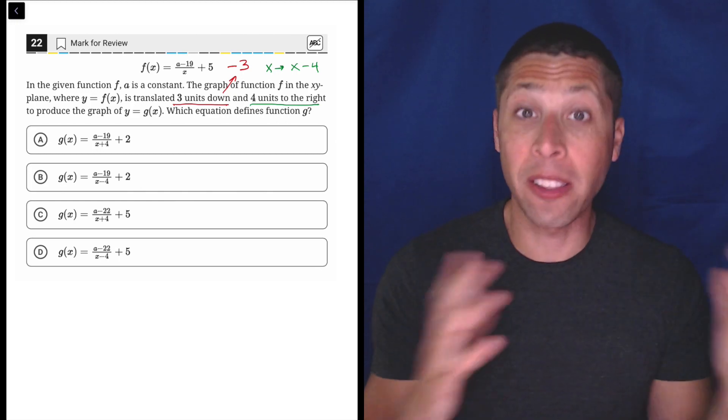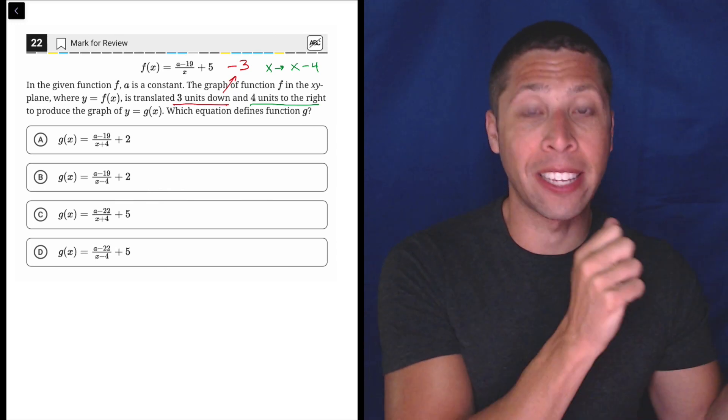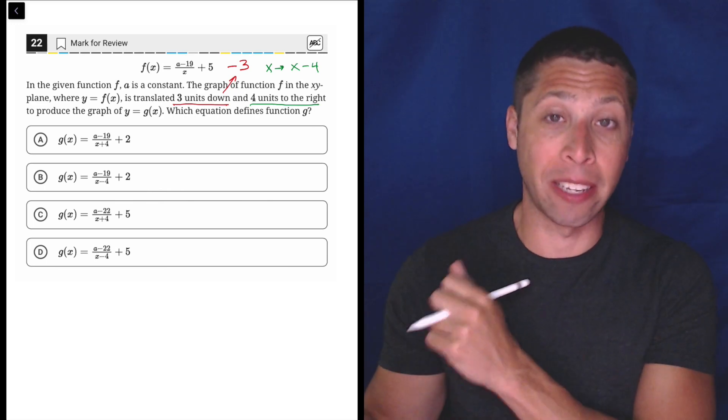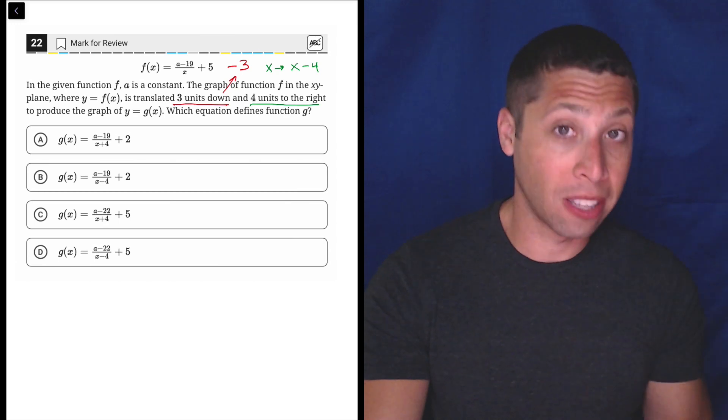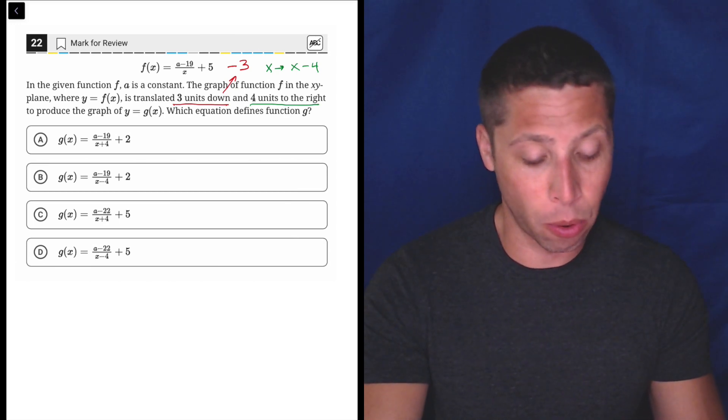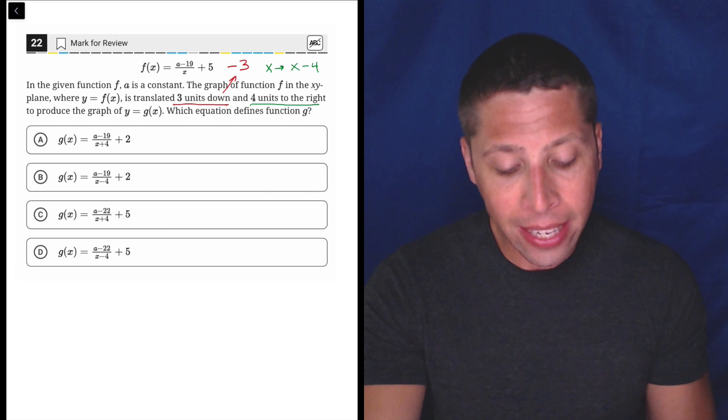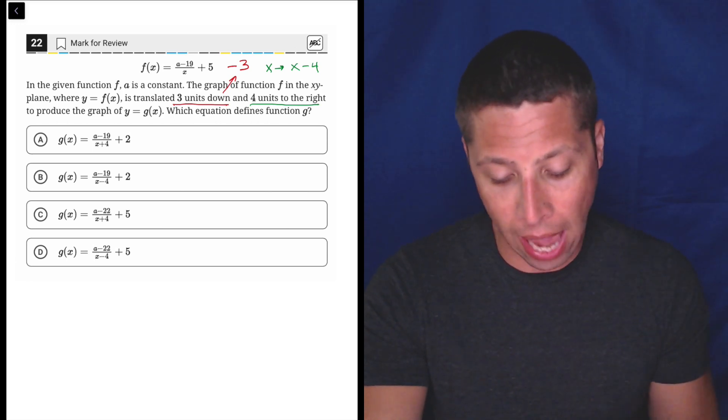Even though yes, we are shifting to the right. So this is just something to memorize, is that if you're going to the right, it's going to be a minus. If you're going to the left, it's going to be a plus. So four units to the left, just to be clear, would be x plus four. But x minus four is going to shift us to the right. And that needs to be substituted in for the x.